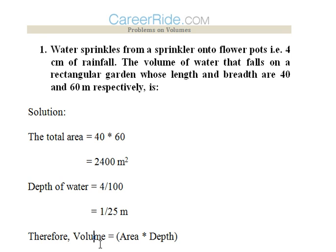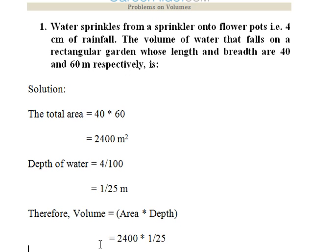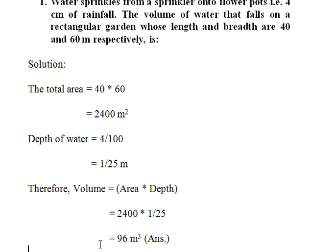Now to calculate the volume of the water which accumulated on ground, we would multiply area by depth. So 2,400 into 1 by 25 m. This is the answer.